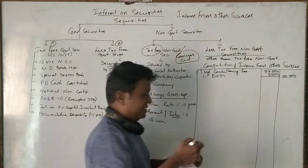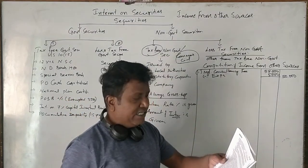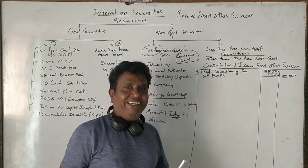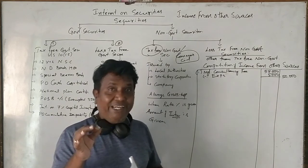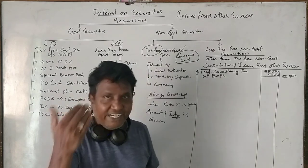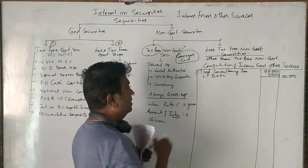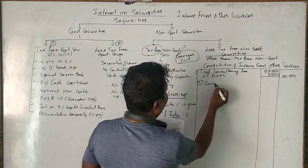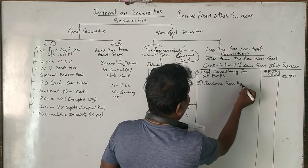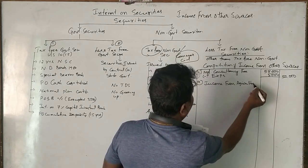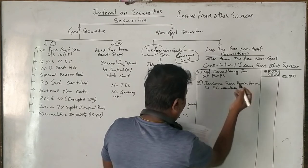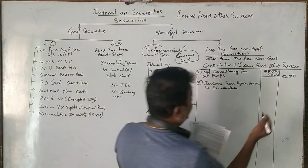Next is income from agriculture in Sri Lanka. Any agricultural income in India is fully exempted, but any agricultural income outside India is fully taxable. Therefore, income from agriculture in Sri Lanka is fully taxable at 20,000 rupees.